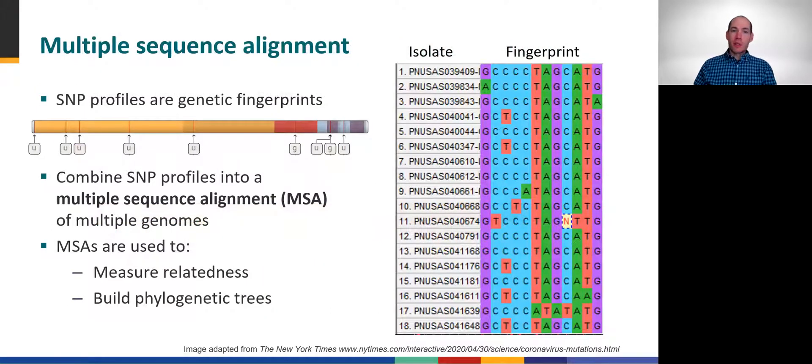The full collection of SNPs detected across the genome provides a genetic fingerprint for a viral strain. For example, we see here a SARS-CoV-2 genome with 10 detected mutations, marking its specific SNP profile or fingerprint. Using high-throughput sequencing methods, it's possible to determine these kinds of SNP fingerprints for hundreds or thousands of viral genomes, which can be combined into what we call a multiple sequence alignment, or MSA.